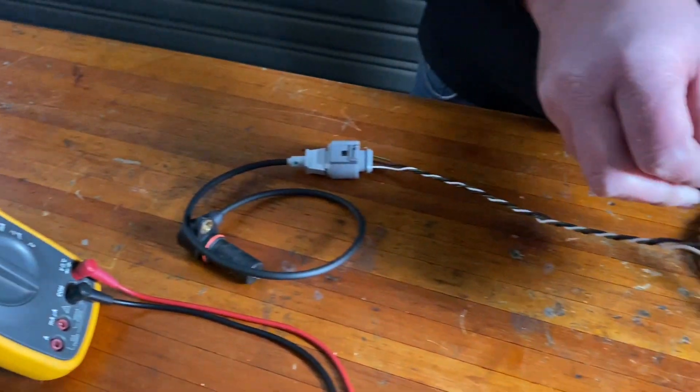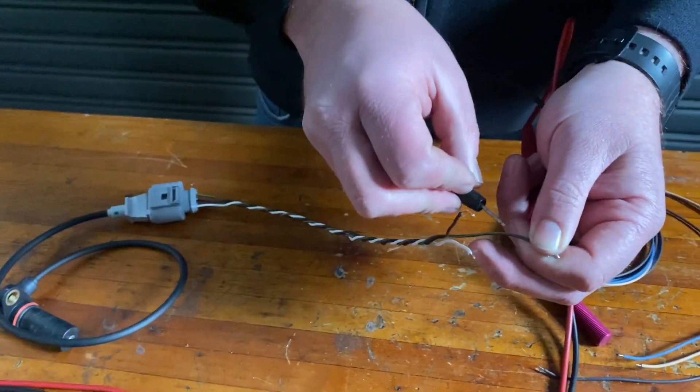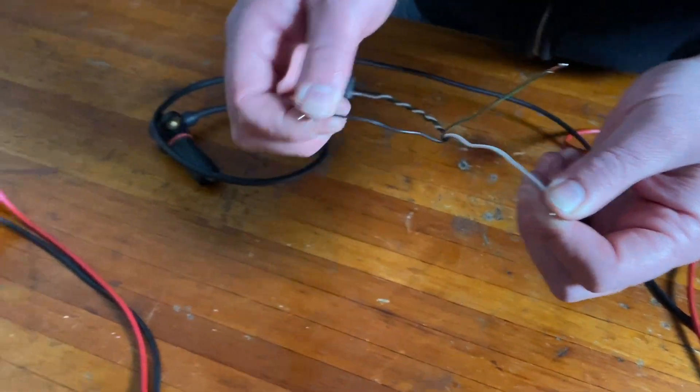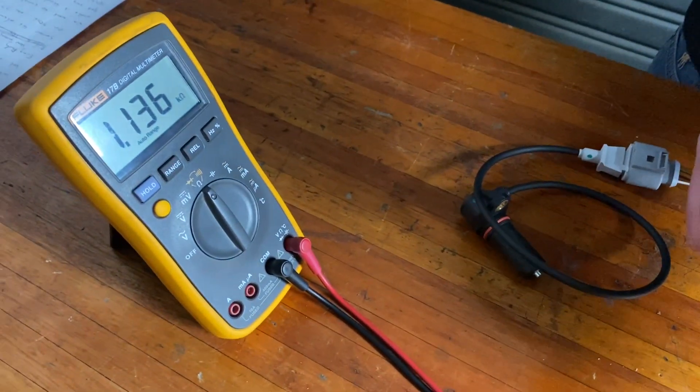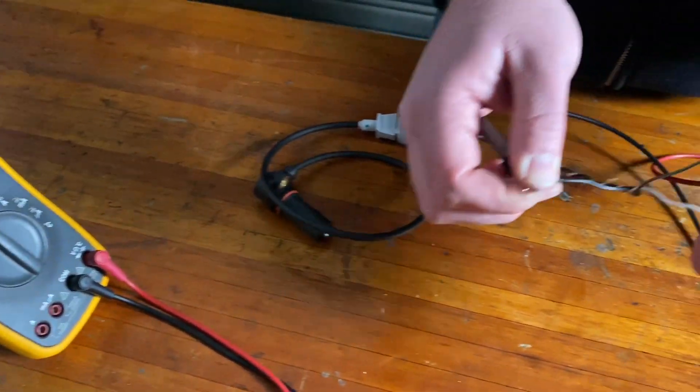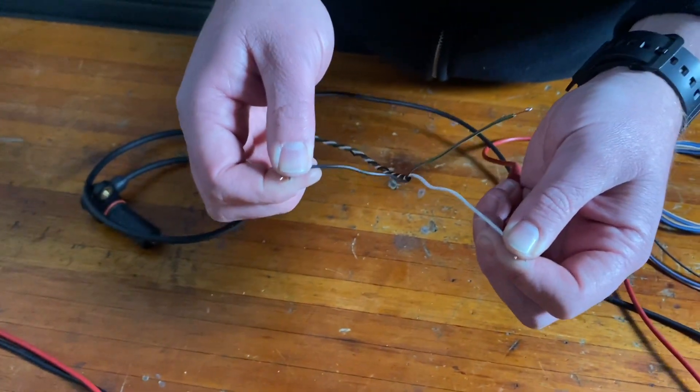So now we've done between the brown and the white and the brown and the black. I don't get a reading. Now we're measuring between the white and black. So immediately you see the ohms are standing still and we're getting a steady reading. So immediately I believe we're on the coil.